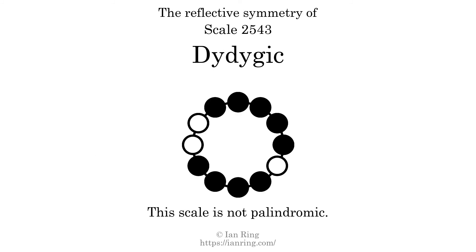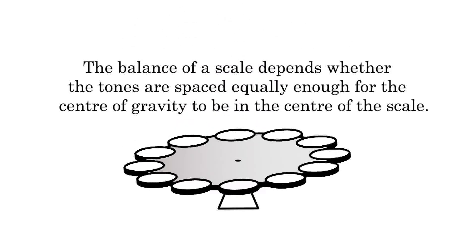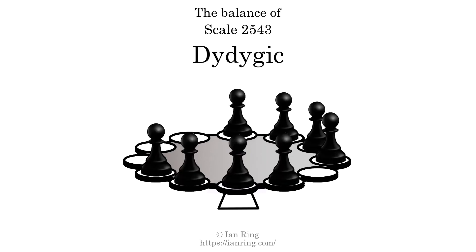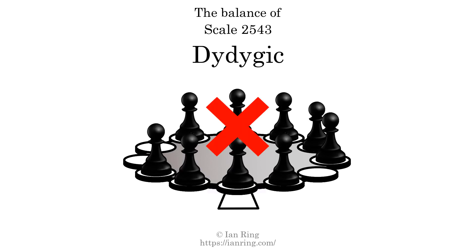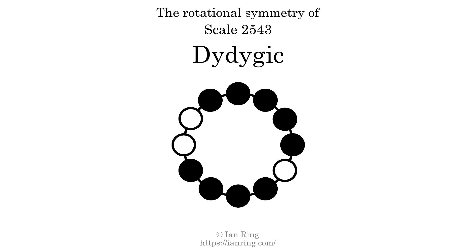This scale has no reflective symmetry. This scale has a different pattern of intervals ascending and descending, so it is not palindromic. This scale has no ridge tones. The balance of a scale depends on whether the tones are spaced equally enough for the center of gravity to be in the center — this scale is not balanced. The inverse of this scale is scale 3827, also known as Dorijic. This scale is chiral; it cannot transform into its inverse by rotational transformation. This scale has no rotational symmetry.